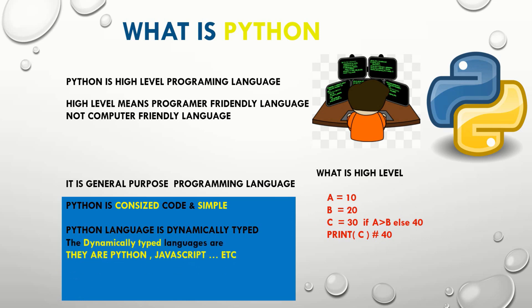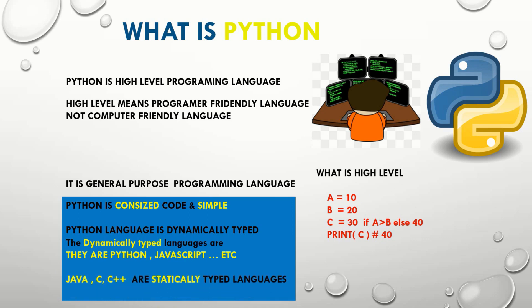Dynamically typed languages include Python and JavaScript. You may ask for an example of statically typed languages. The statically typed languages are C, C++, and Java.